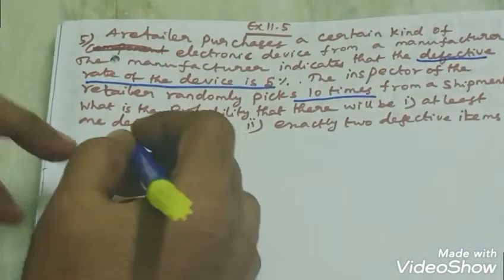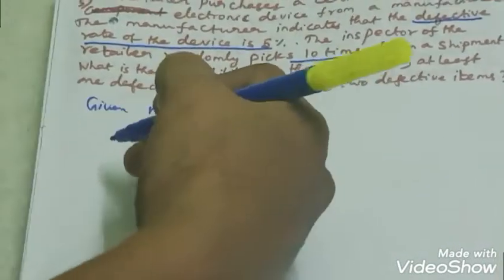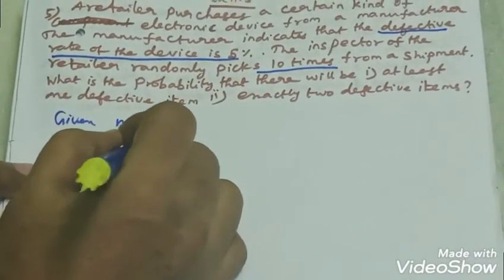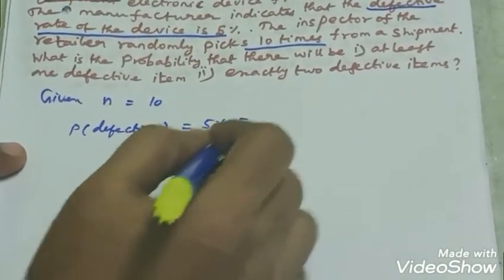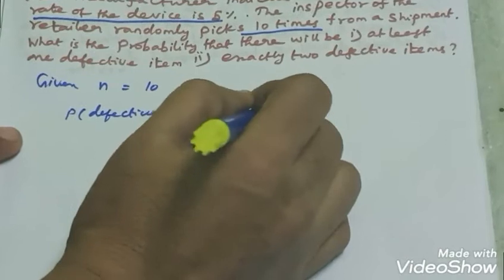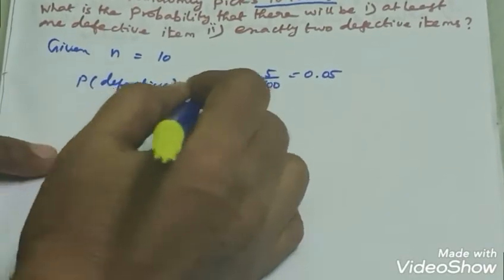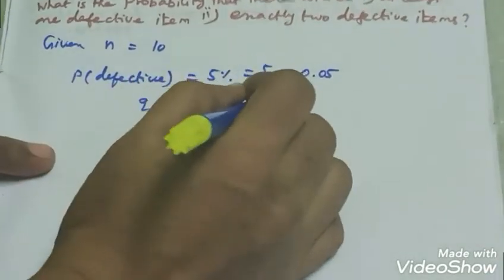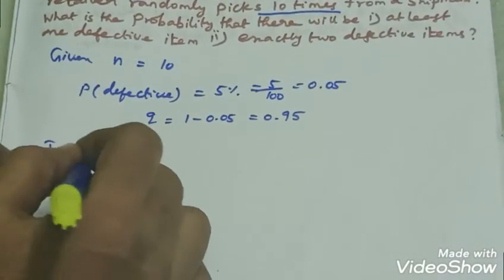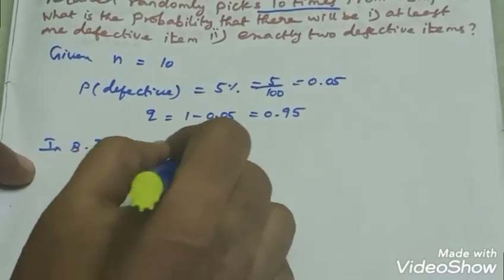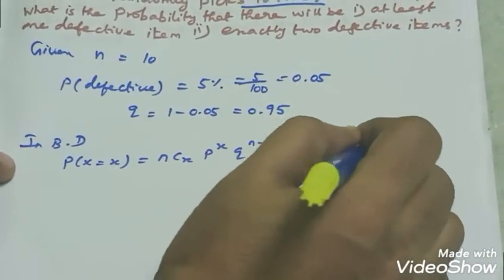So n is equal to 10. Probability of defective p is 5%, that is 5 by 100, which is equal to 0.05. q is equal to 1 minus 0.05, that is 0.95. In the binomial distribution formula: P(x) = nCx * p^x * q^(n-x), where x equals 0, 1, 2, etc., up to 10.